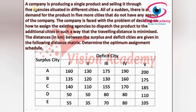This is a minimization type of problem. A company produces a single product and sells it through five agencies situated in different cities. Suddenly there is a demand from five more cities for the product, but the company does not have agencies in those cities. The company is faced with the problem of deciding how to assign the existing agencies to dispatch the product to the additional cities in such a way that the total distance is minimized.